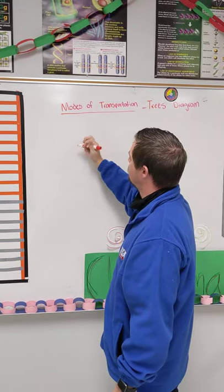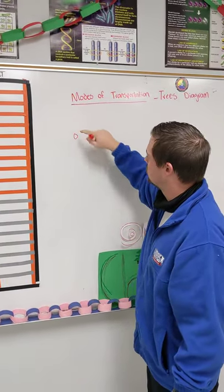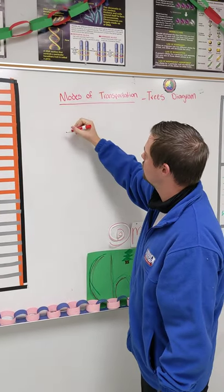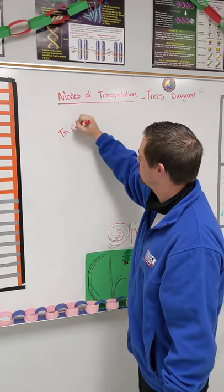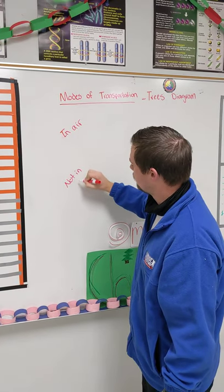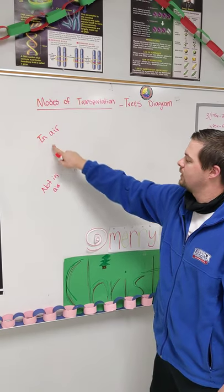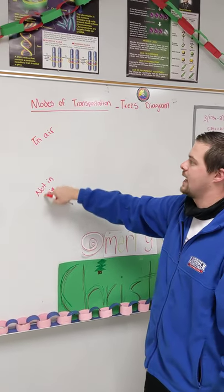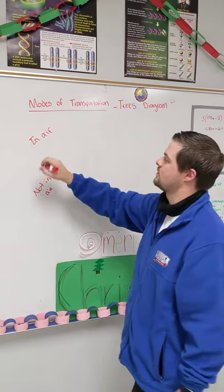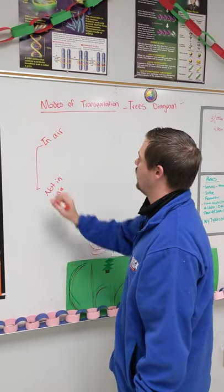So we'll say modes of transportation that are, we'll go with in the air, and not in air. It's very important that whatever topic we pick, the other one is going to be not that topic. It keeps it very vague so we can continue narrowing down our topic.